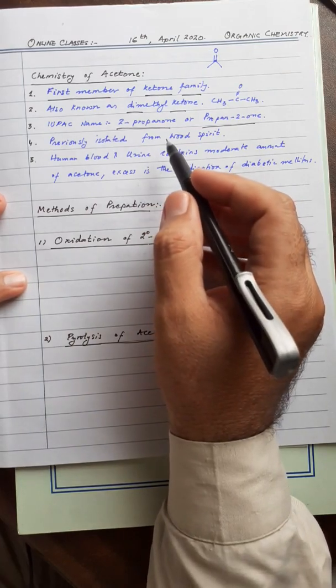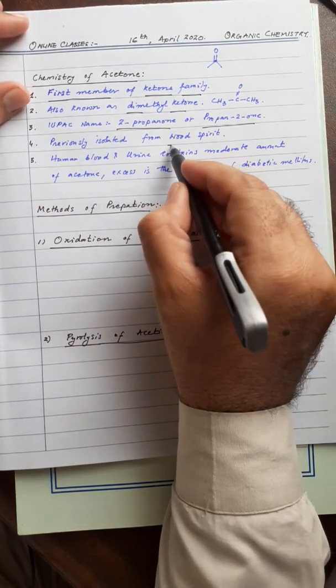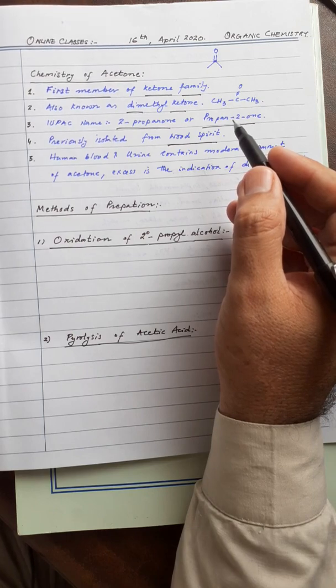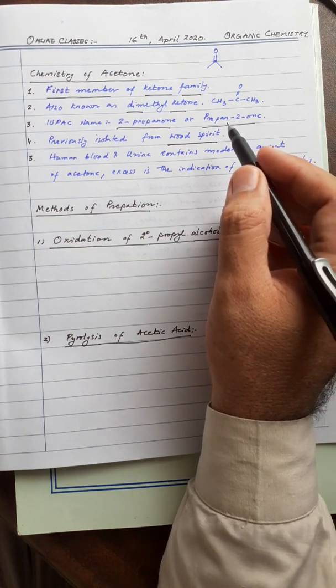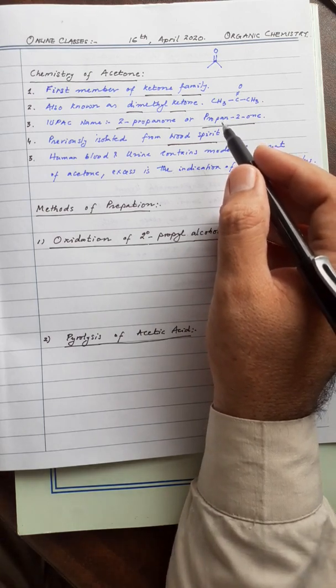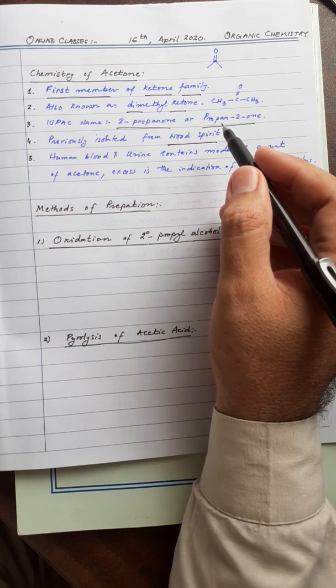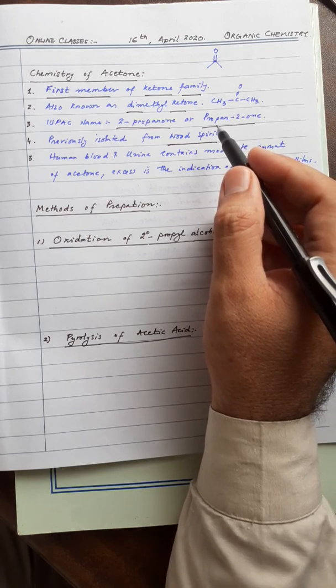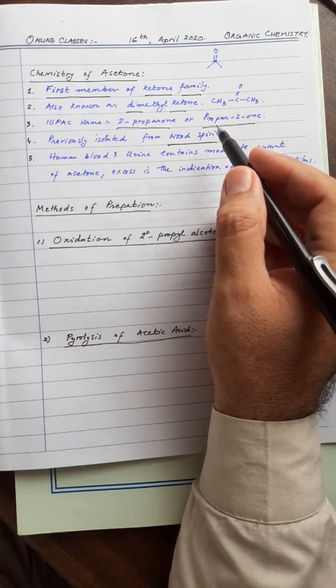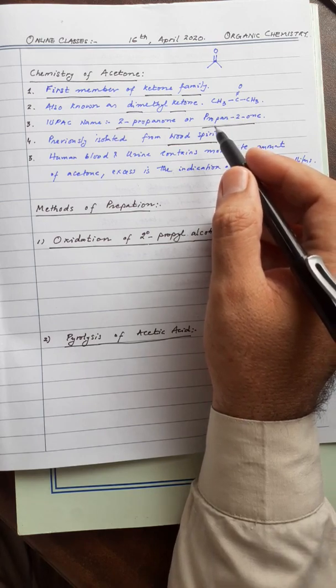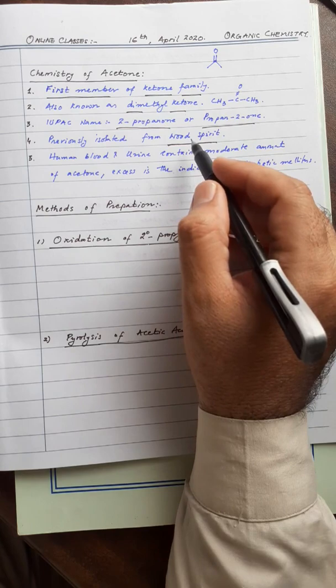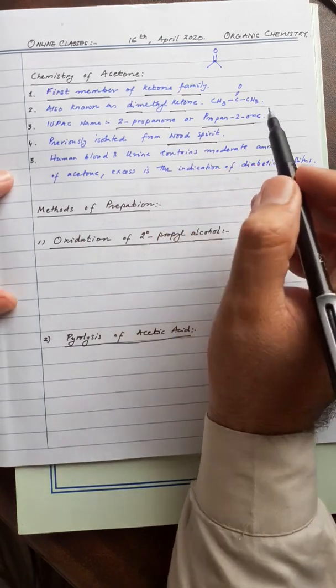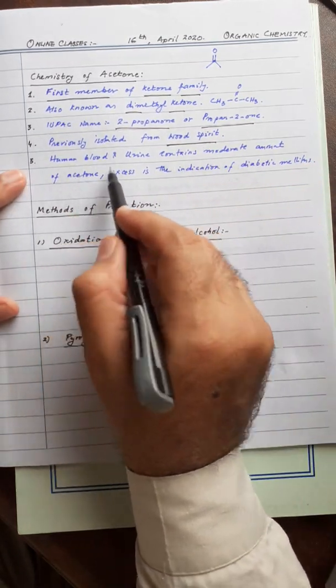Acetone is naturally found in wood spirit. When we burn wood, previously energy was found by burning wood. Even these days in villages where there's no natural gas, people use burned wood. When wood is burned, a dark brown liquid is produced which contains methyl alcohol as the number one ingredient, but it also contains acetone. So this is a natural source of acetone.